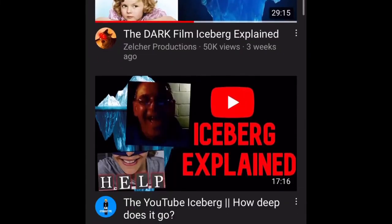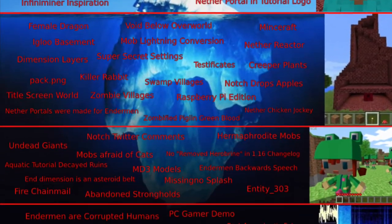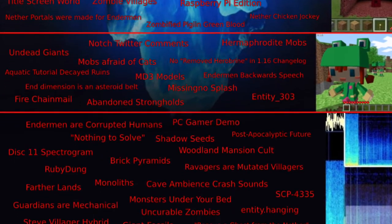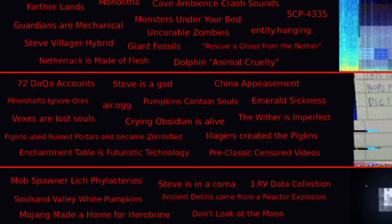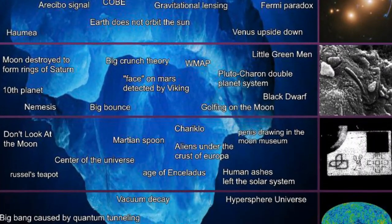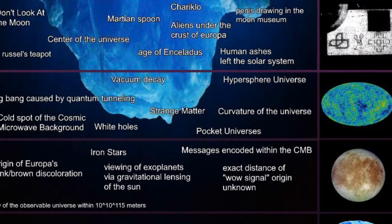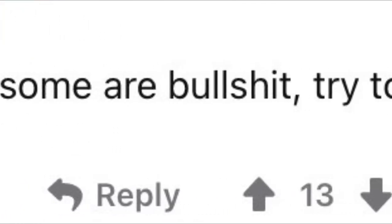I have been binge watching a ton of iceberg image videos. If you don't know, iceberg images list well-known facts about a topic first and end by listing very obscure facts about it. The iceberg image I'm explaining is from the user alphium. Before I start, the creator said most of these are real but some are bullcrap, try to list the fake ones, so keep that in mind.